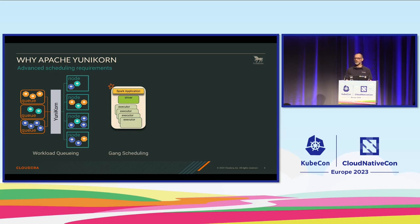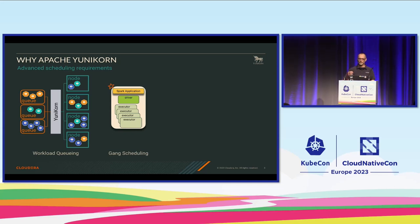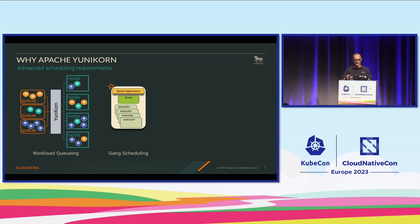We want to do an all-in-one kind of scheduling setup — gang scheduling. We don't spawn up one pod; we want to do a set of pods, where one is a driver and the others are workers. Spark is a good example for that, but there's also PyTorch, MPI, and a number of other frameworks.